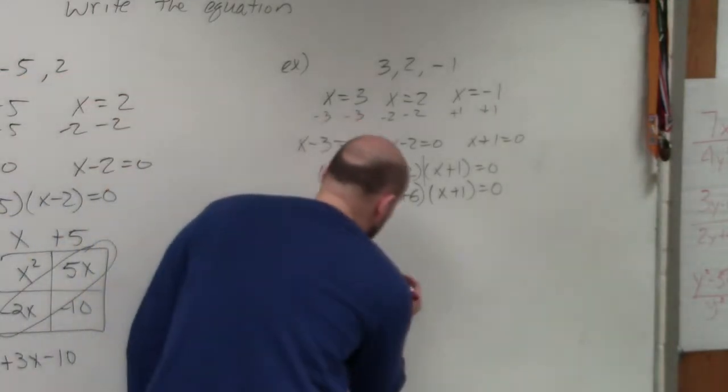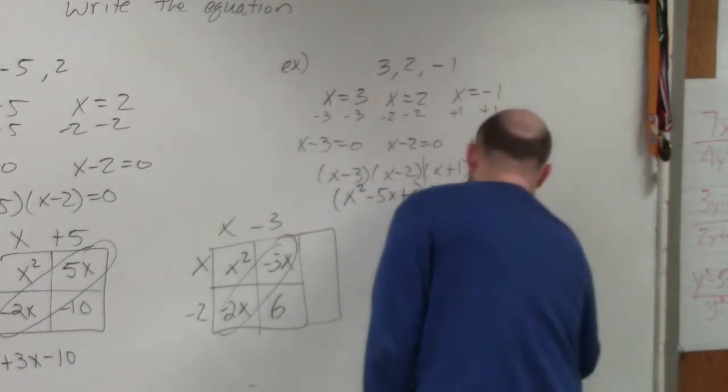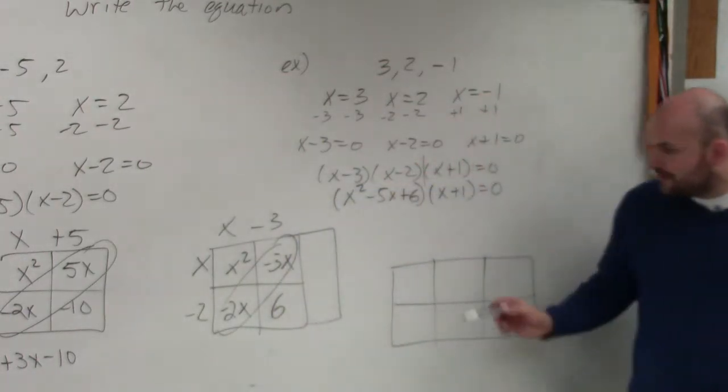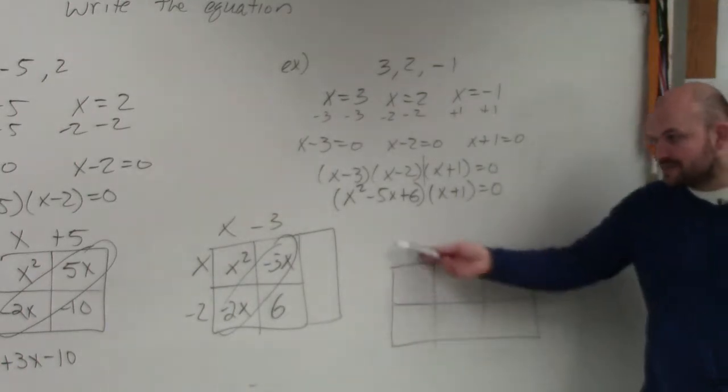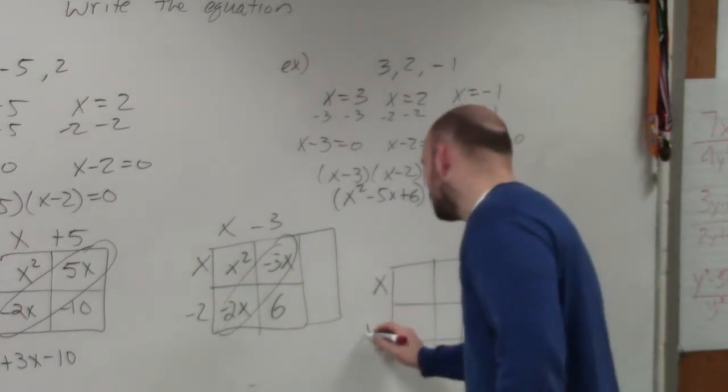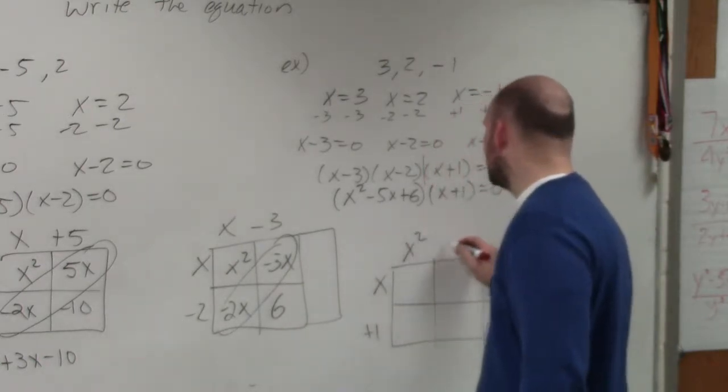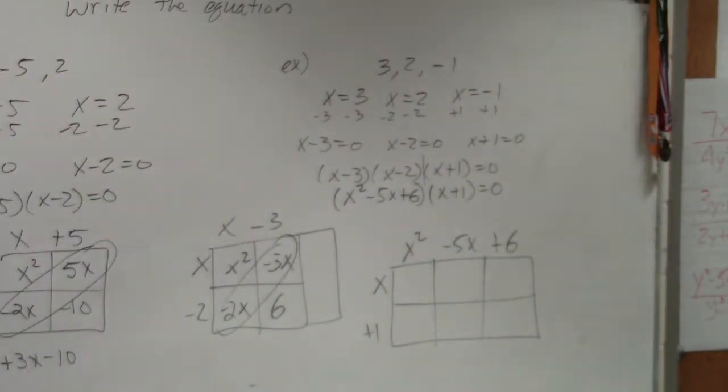So when I do my multiplication, I now have three columns. I'm sorry, I add an extra column. Now I have three columns and two rows. So I do x plus 1, and I do x squared minus 5x plus 6. Does everybody see what I did to do that?